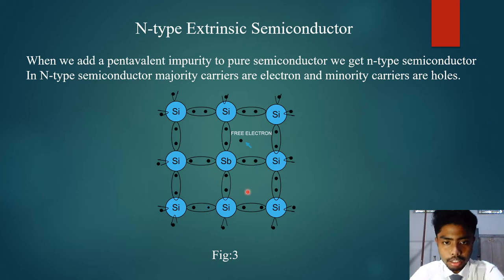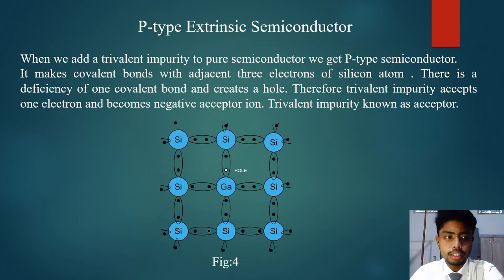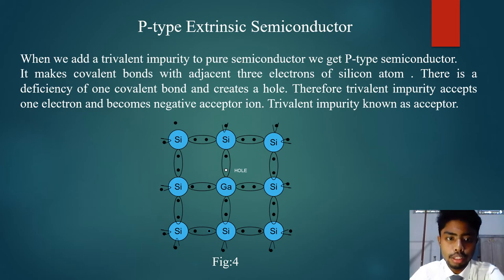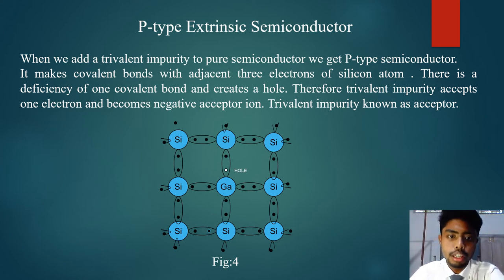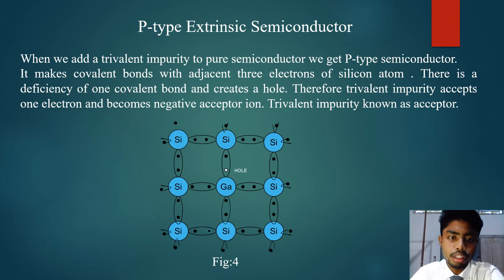P-type semiconductors are obtained when traces of a trivalent impurity like boron are added to pure silicon crystal. The three valence electrons of the gallium atom form covalent bonds with the four surrounding silicon atoms, but one bond is left incomplete and gives rise to a hole, as shown in the figure. Gallium, called an acceptor impurity, causes as many positive holes in the silicon crystal as there are gallium atoms, thereby producing a P-type — P for positive — extrinsic semiconductor. In this type of semiconductor, conduction is by the movement of holes in the valence band.